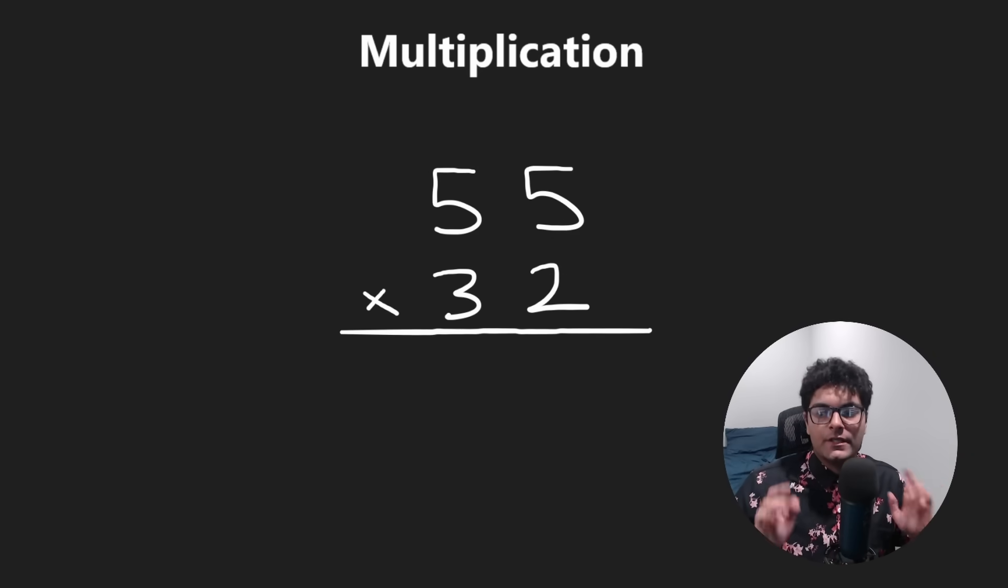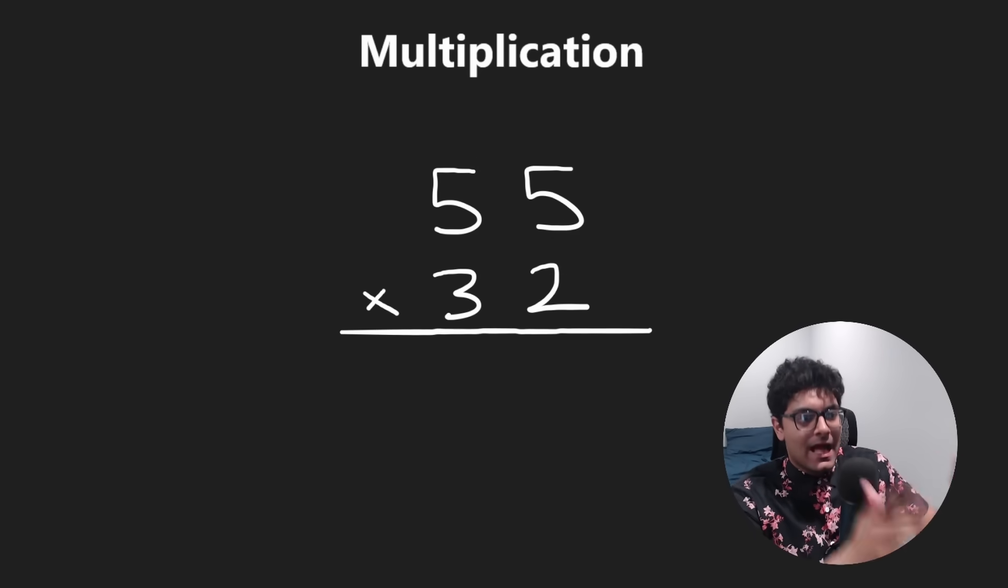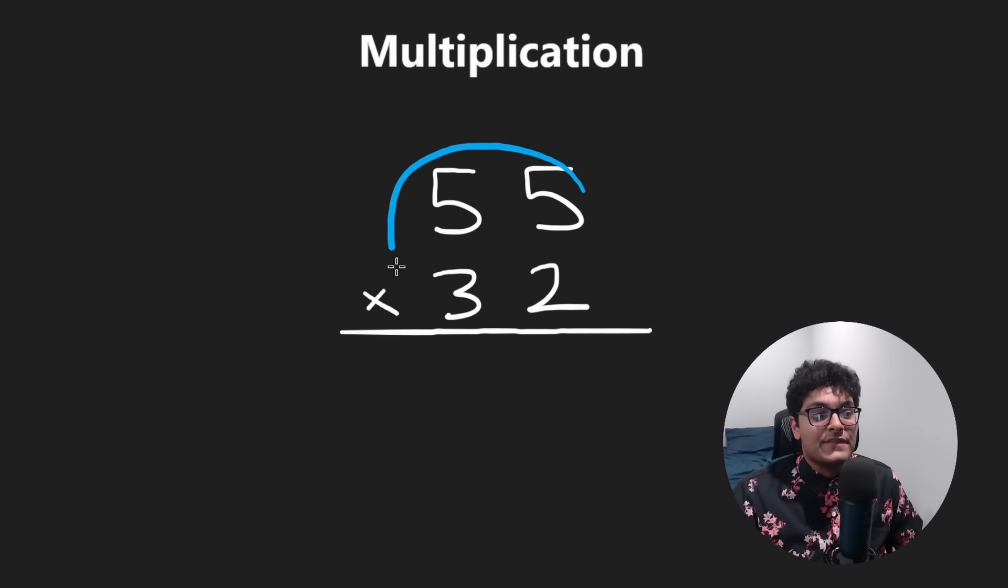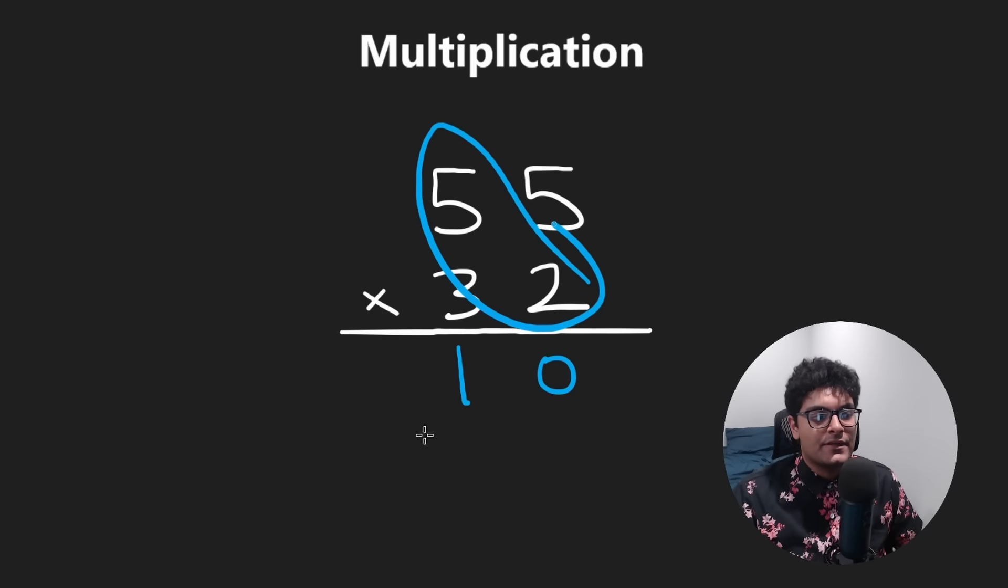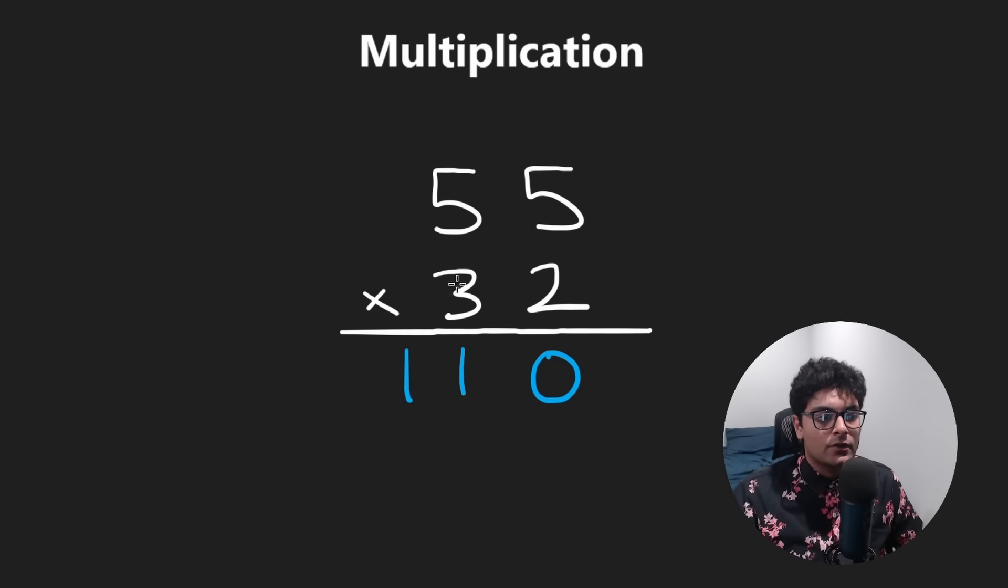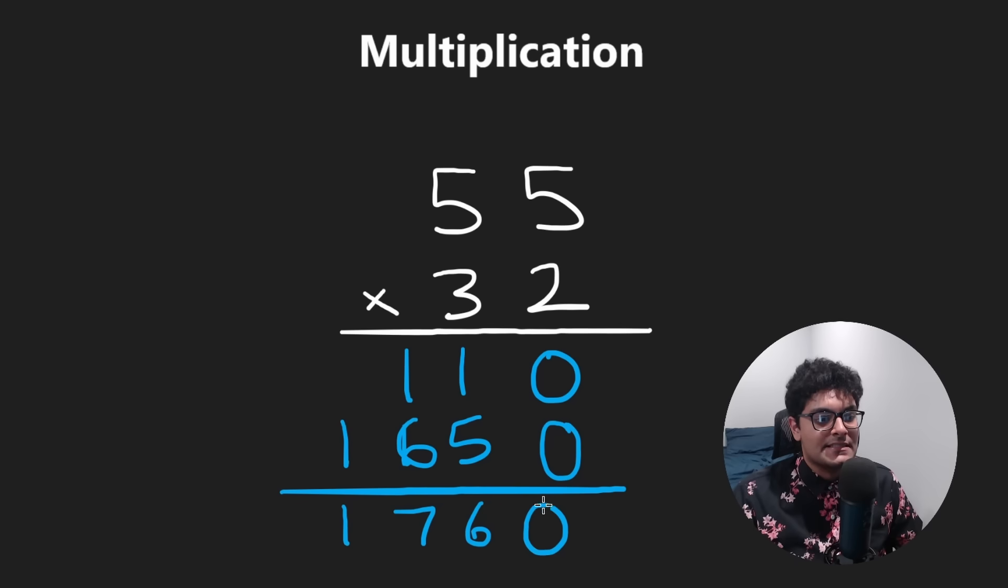We all learned long multiplication as kids. We all memorized this algorithm. To get the product of these two numbers, first we take 2 times 5, that's 10. The 1 is carried, then we do 2 times 5 over here, that's 10 again. We remember we carried the 1, so it's actually 11. We start all over with the 3 on the second row, but before we have the 0 over here, and then we say 3 times 5, that's 15. Then we say 3 times 5 once again, that's 15, so this becomes 16. Take these two, add them together, we get 1760.